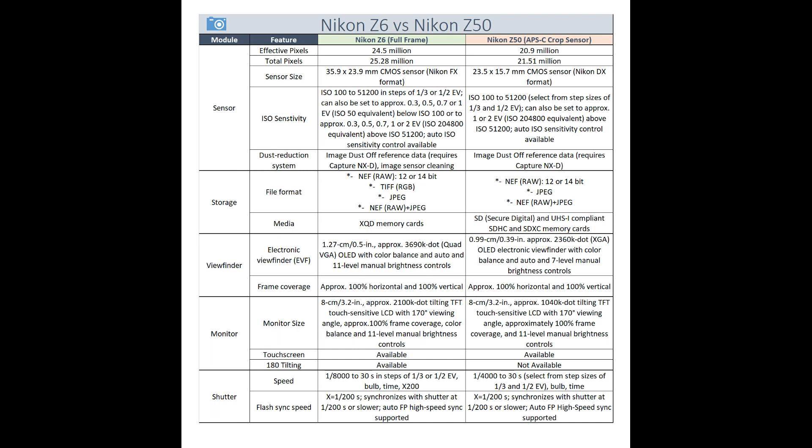Regarding storage and file options, the Nikon Z6 offers four different file format options, while the Nikon Z50 only offers three — the TIFF option is not available in the Z50. As far as memory cards are concerned, the Nikon Z50 also does not support XQD cards.